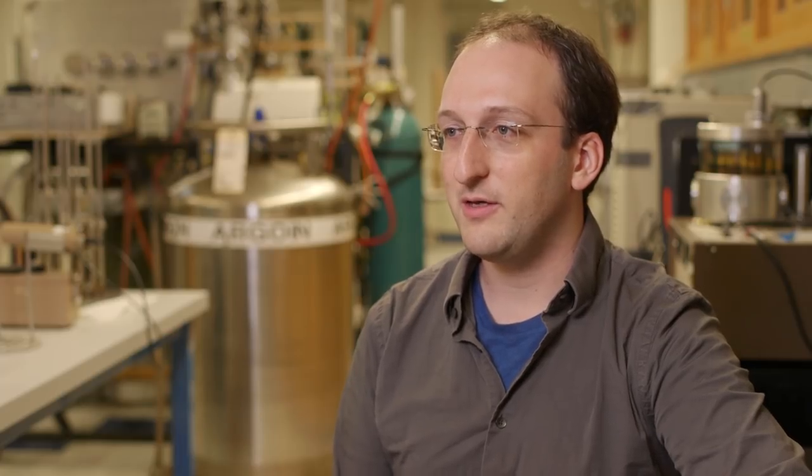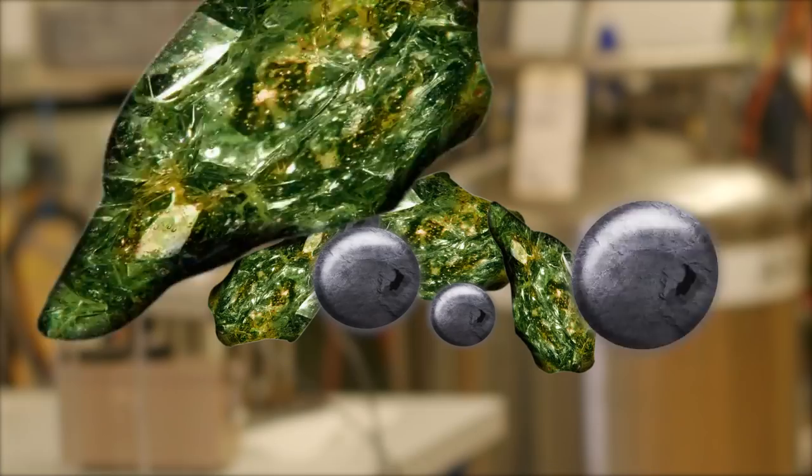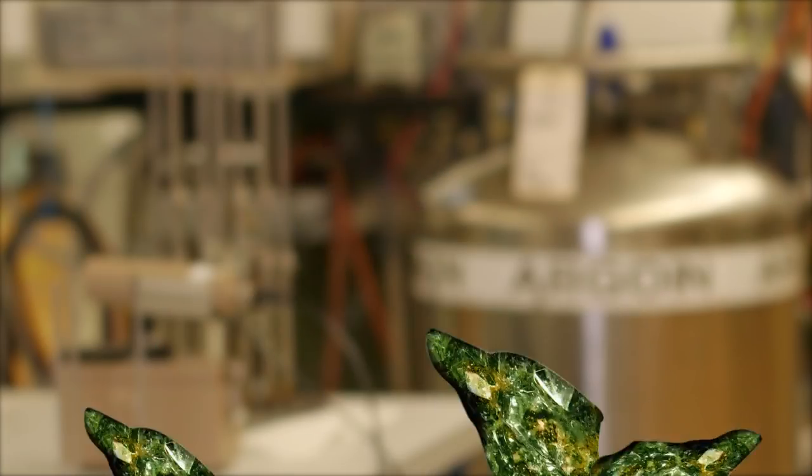One of the many differences is that a nuclear weapon is almost pure fissile material. It's about 90% of the fissile isotopes, either uranium-235 or plutonium-239, whereas reactor fuel is only about 5%. And just getting a bunch of uranium and plutonium together doesn't make a weapon.